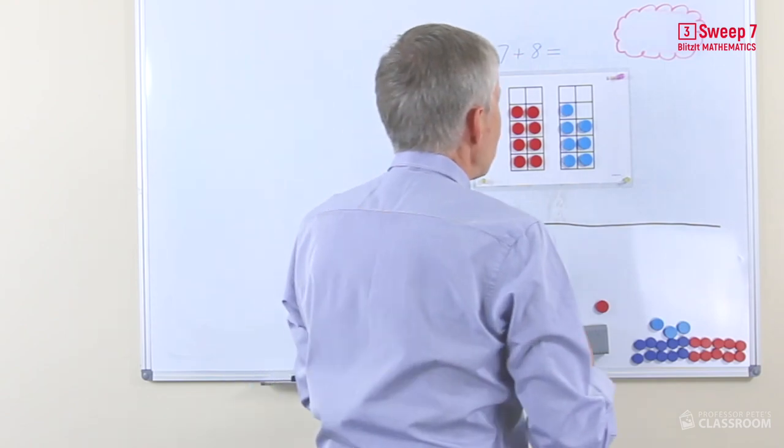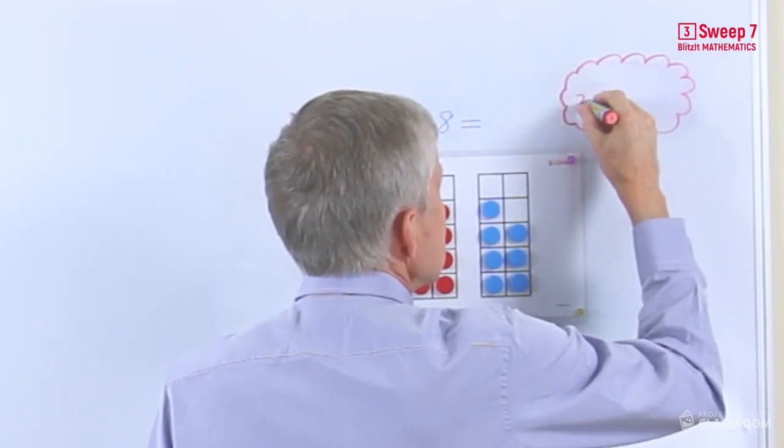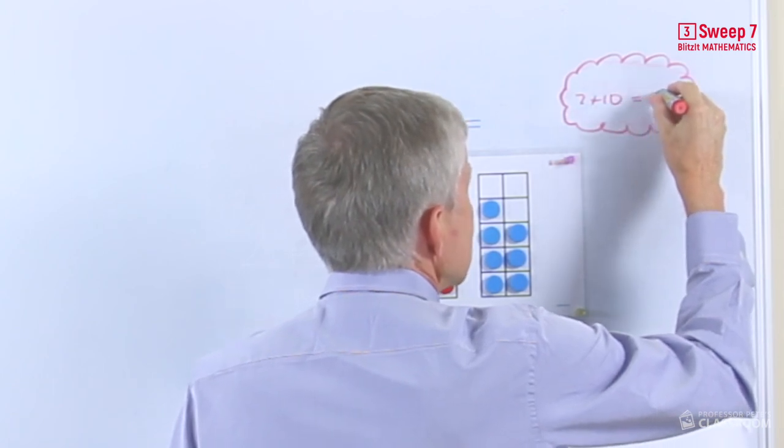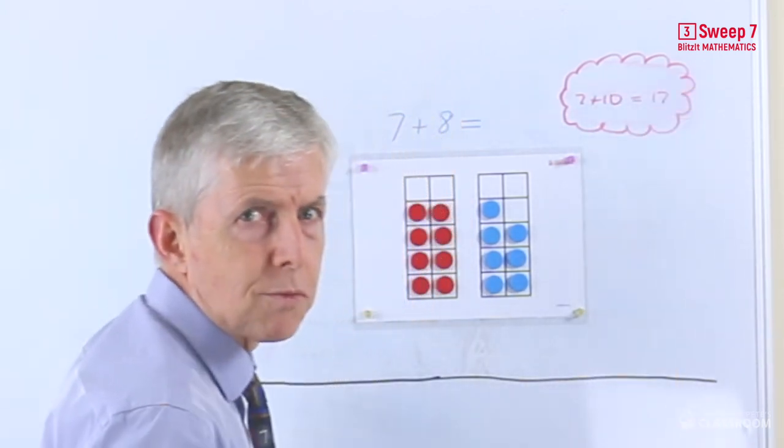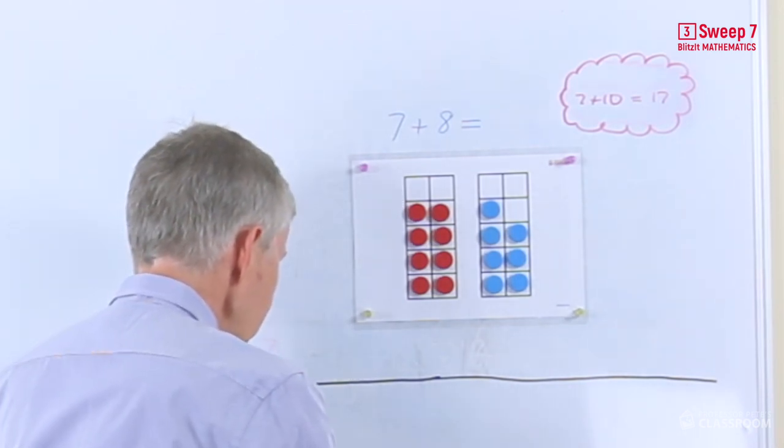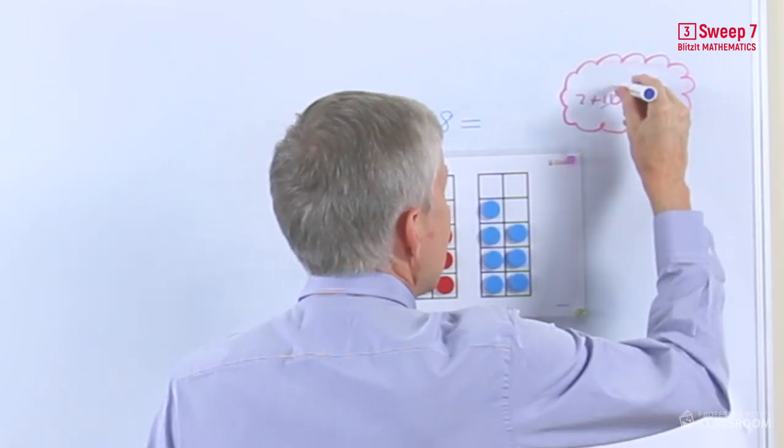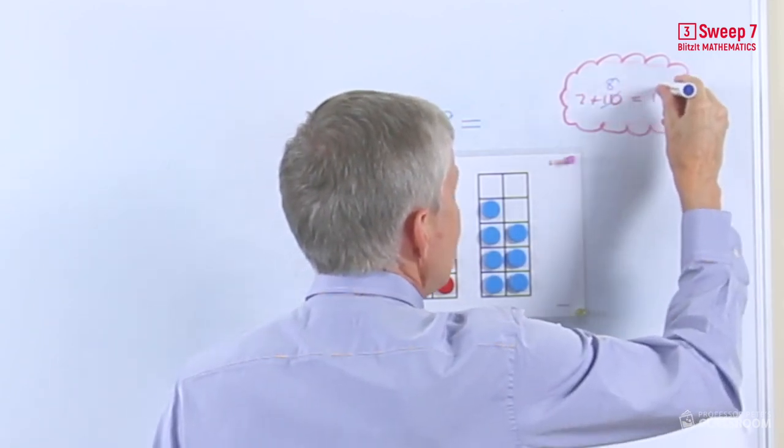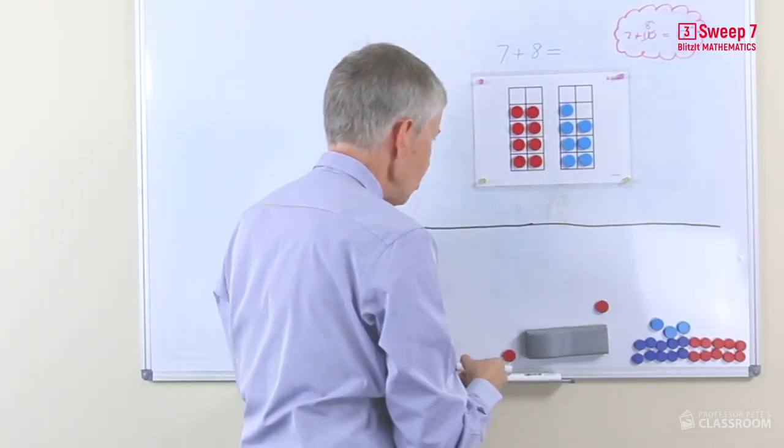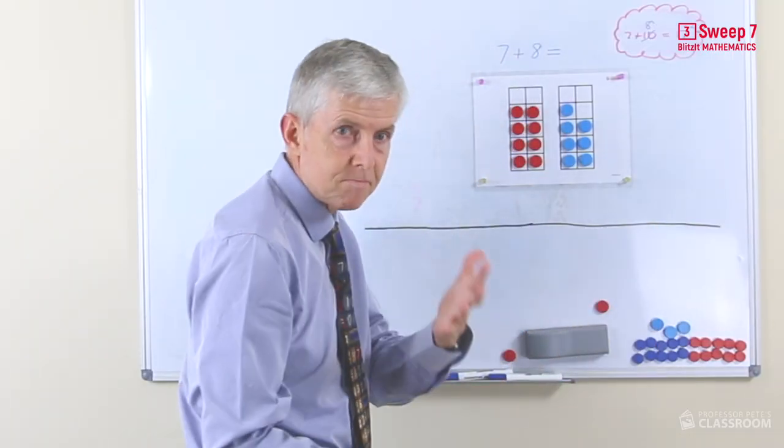The other way of approaching this is to say well suppose it was 7 plus 10, the answer would be 17 and again that's a place value question, 10 and 7 is 17. But if we're not adding 10, but we're adding 8, then this would be 2 less. So instead of 17 it would be 15, pretty straightforward.